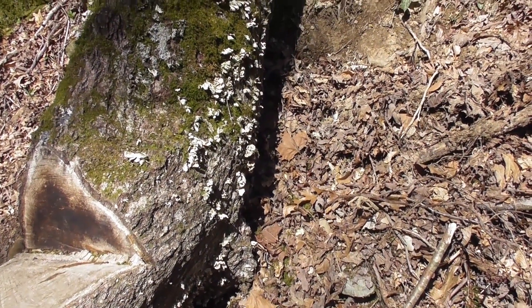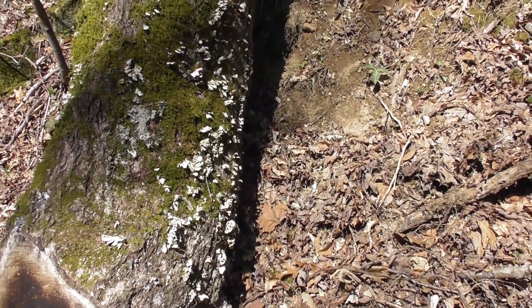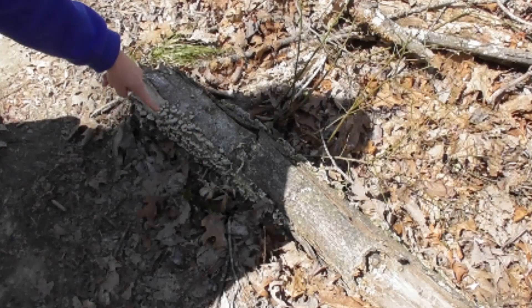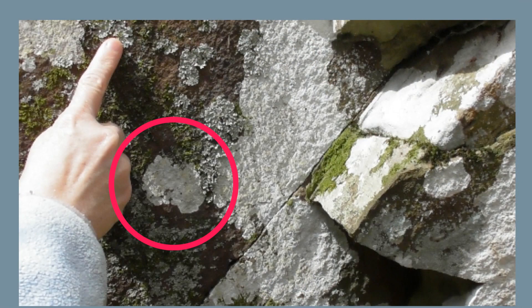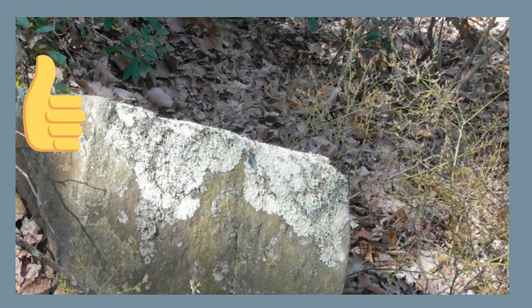Lichen may act plant-like, but lichen are not plants. Lichens may have tiny leafless branches, they may have flat leaf-like structures that look like flakes, or they may just appear like a powder-like substance.